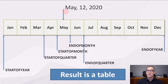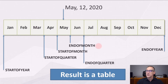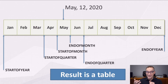If the filter context contains one date only — the 12th of May 2020 — ENDOFMONTH returns the end of May, whereas STARTOFMONTH returns the beginning of May. ENDOFQUARTER returns the end of June, that is the quarter to which May belongs to, and STARTOFQUARTER returns the 1st of April, the beginning of the current quarter. STARTOFYEAR and ENDOFYEAR always return the 1st of January and the 31st of December of the current selection, where by selection we mean the content of the filter context.